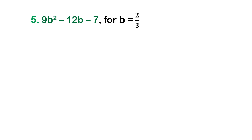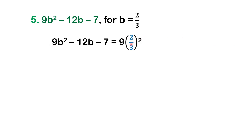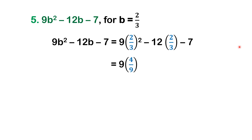Another example: 9b squared minus 12b minus 7. Solve for 9b squared minus 12b minus 7 if the value of b is equal to 2 thirds. Just replace the variable b with 2 thirds. So we have 9 times 2 thirds squared, then negative 12 times 2 thirds, then copy minus 7. For 2 thirds squared, multiply 2 thirds by itself: 2 times 2 is 4, and 3 times 3 is 9. Therefore we have 4 over 9.